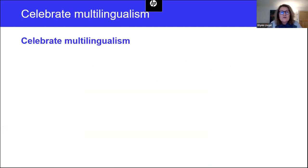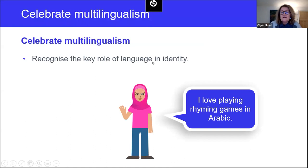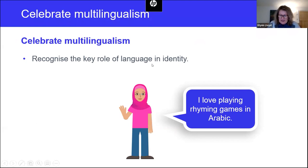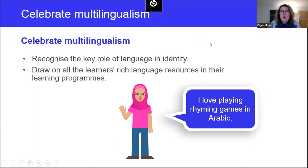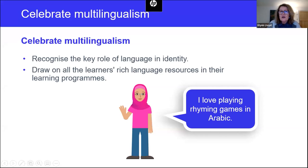The third key aspect is creating a school environment that celebrates multilingualism. Language and the languages we speak form a key part of who we are, of our identity. When the languages we know and use are recognized within the school community, it means that we ourselves are recognized. Finding out about the languages your pupils know, what they do in those languages, and all their rich language resources — all of that can be brought into the programs you devise and into how you build an inclusive environment across your school.